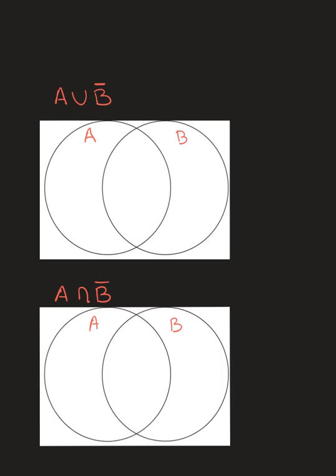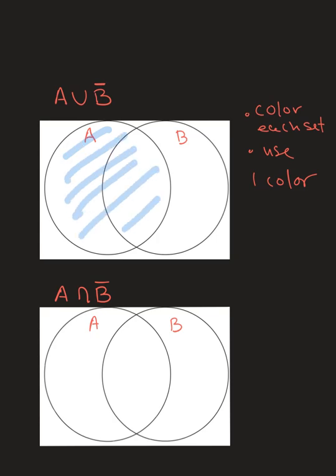Let's look at A union B complement. With unions, I just have to think about the two sets: where's A — color A — and where's B complement — color B complement. I'm going to use one color, blue. So I color all of A first.